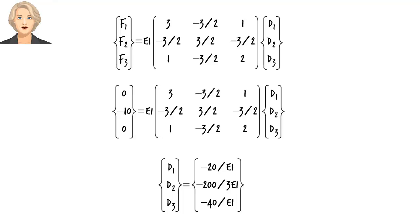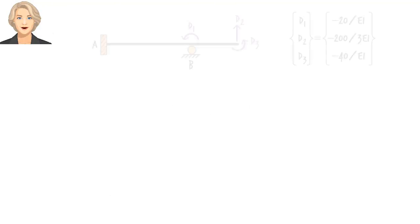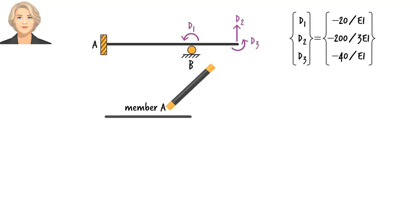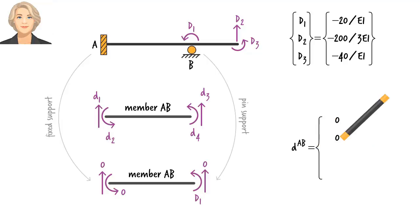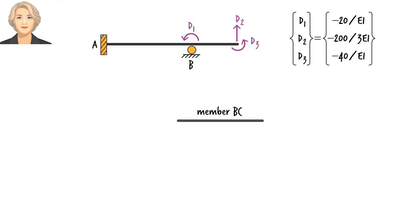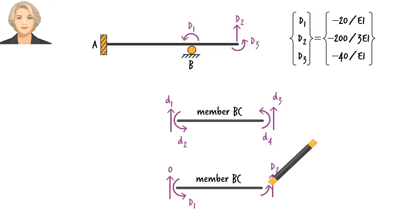Knowing the system displacement vector, we can easily determine member displacement vectors. Member AB has four displacements. Three of them are zero and the fourth one is the same as system displacement D1, which is the rotation at joint B. So we can write... For member BC we can write... or...